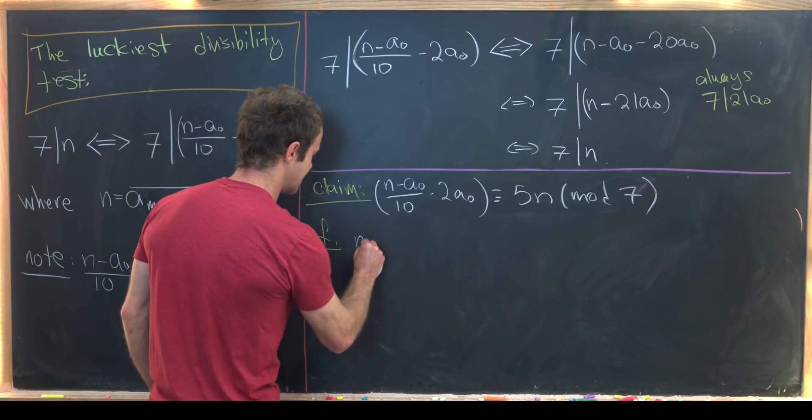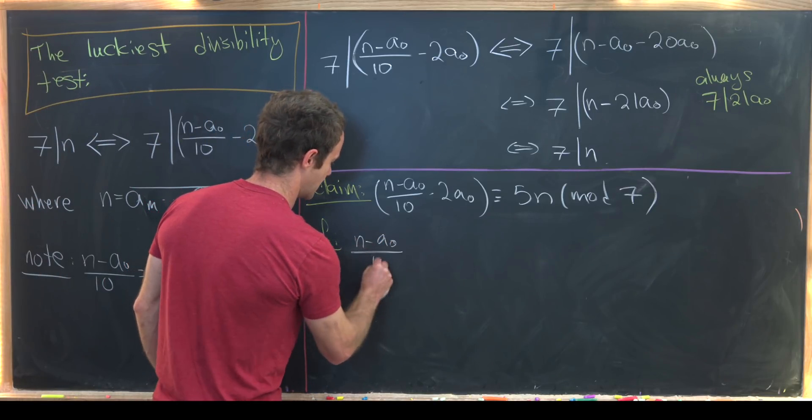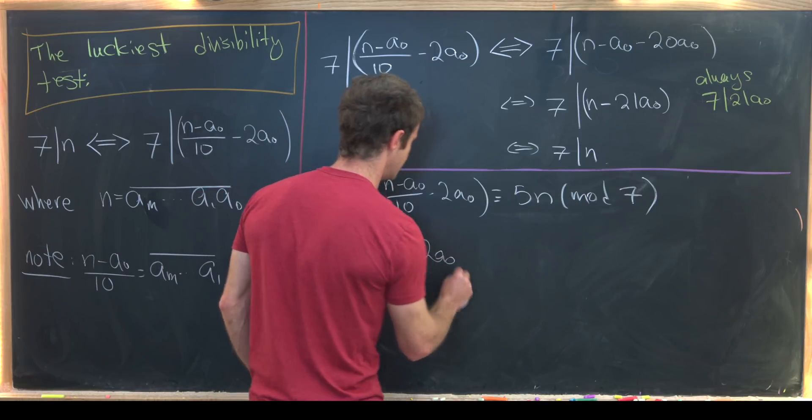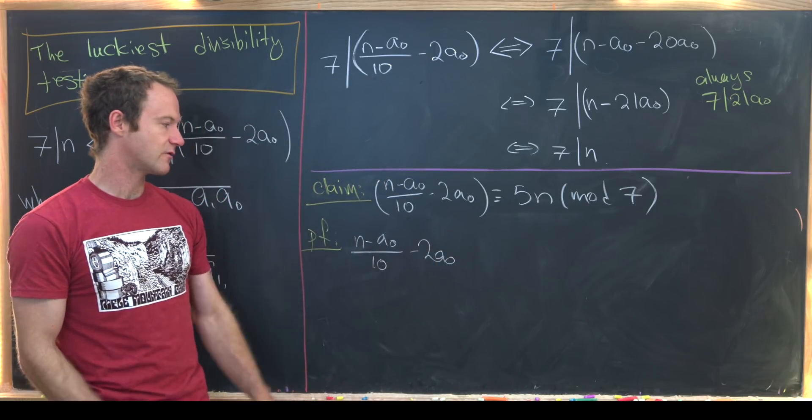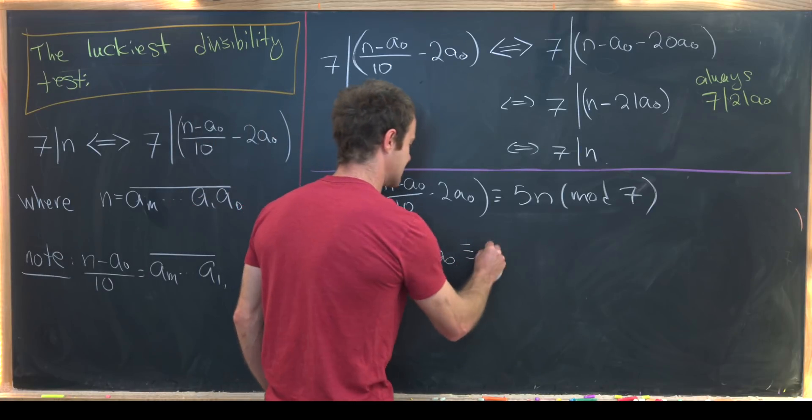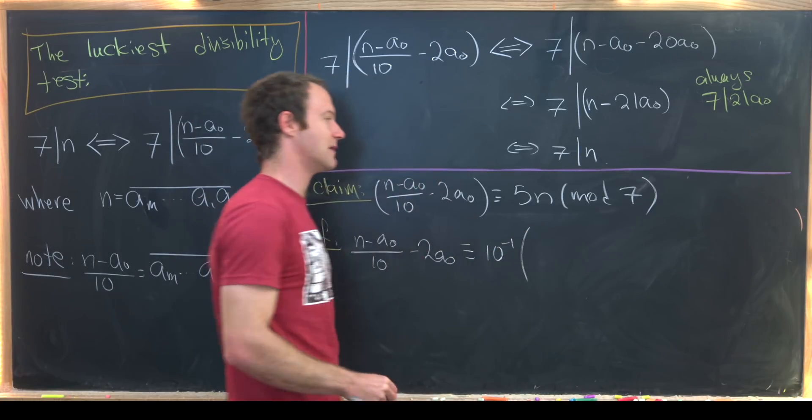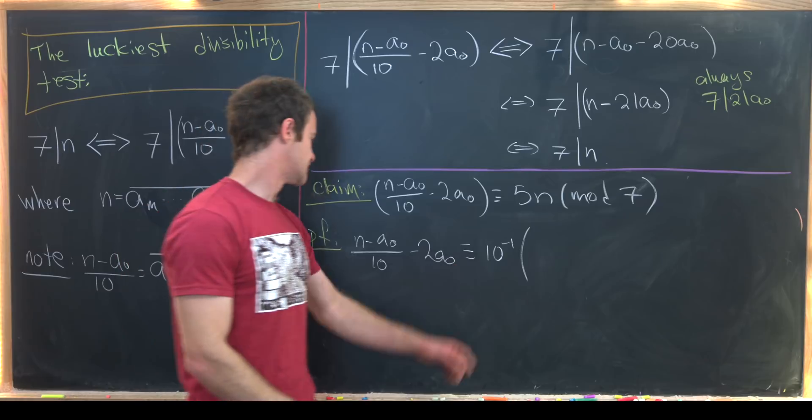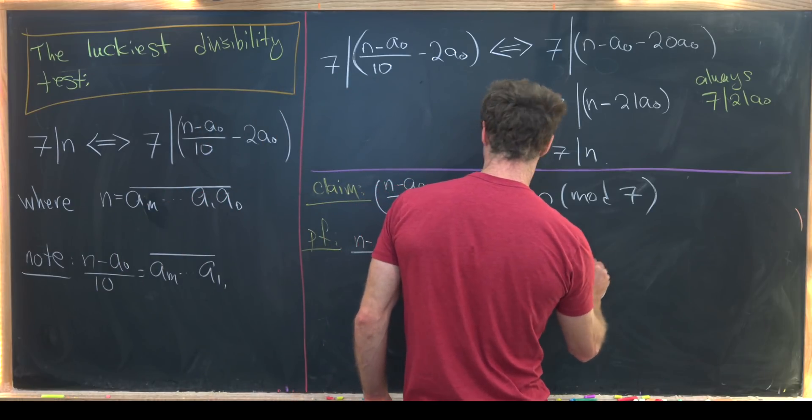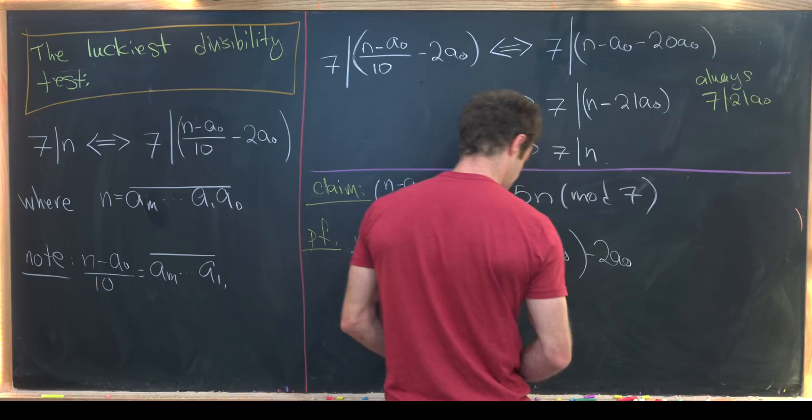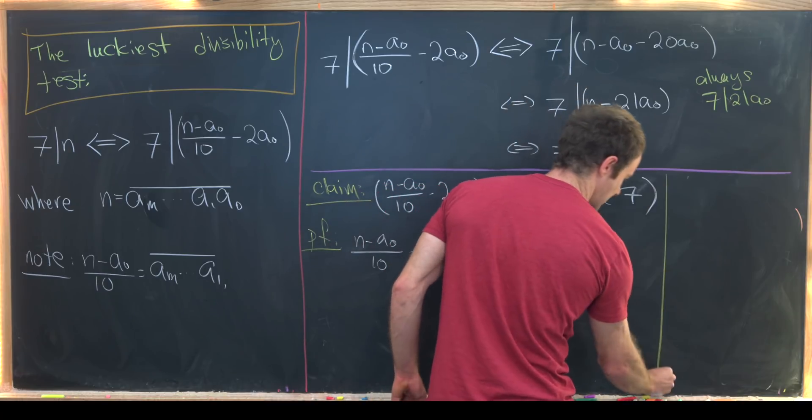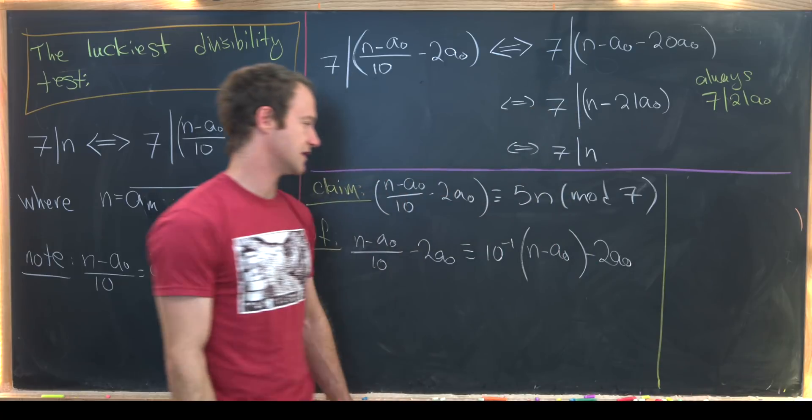So I'm going to take this n minus a naught over 10 minus 2 a naught and I'll rewrite 10 as 10 inverse keeping in mind that we're working mod 7. So we have 10 inverse times n minus a naught minus 2 a naught. And now we'll go over here and make a little bit of a side calculation.